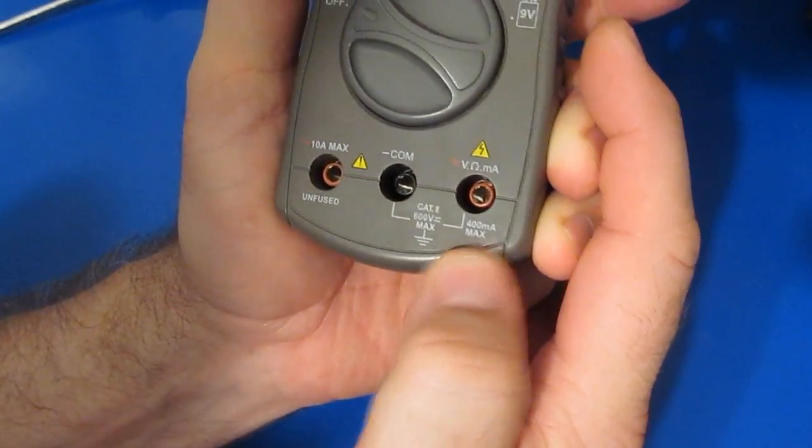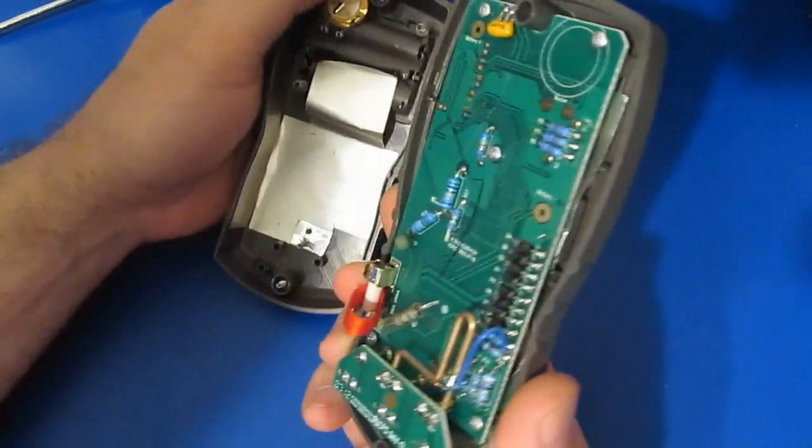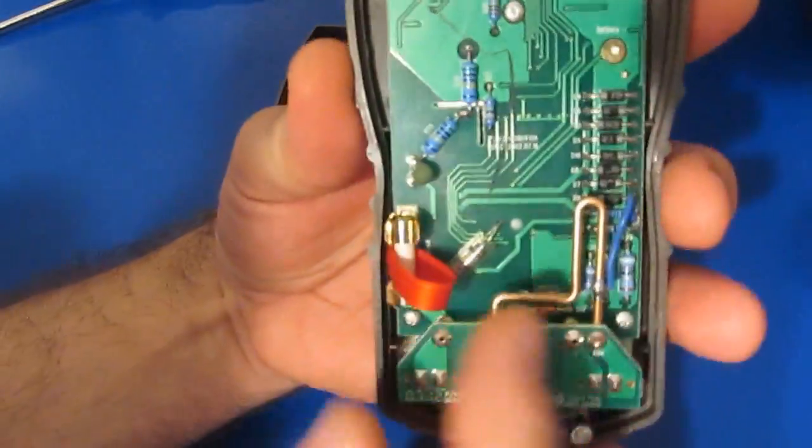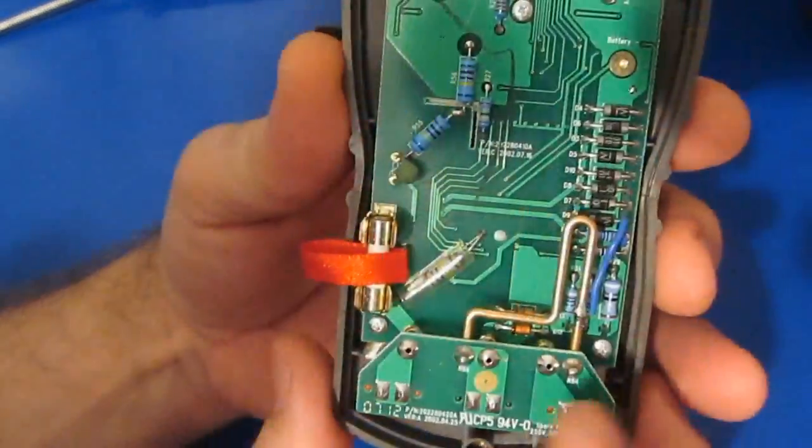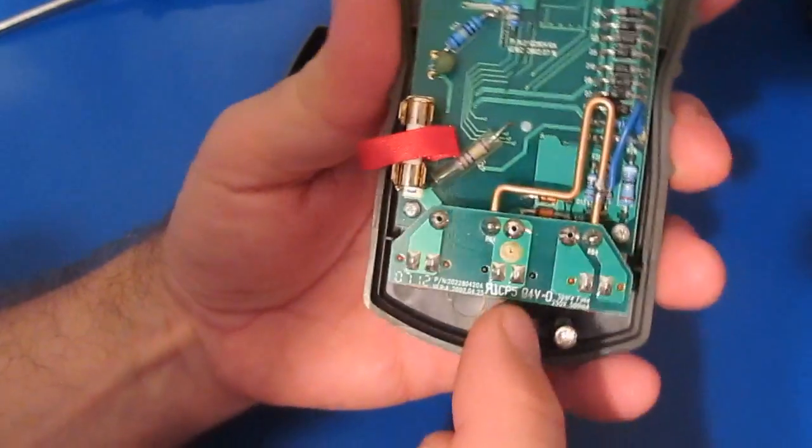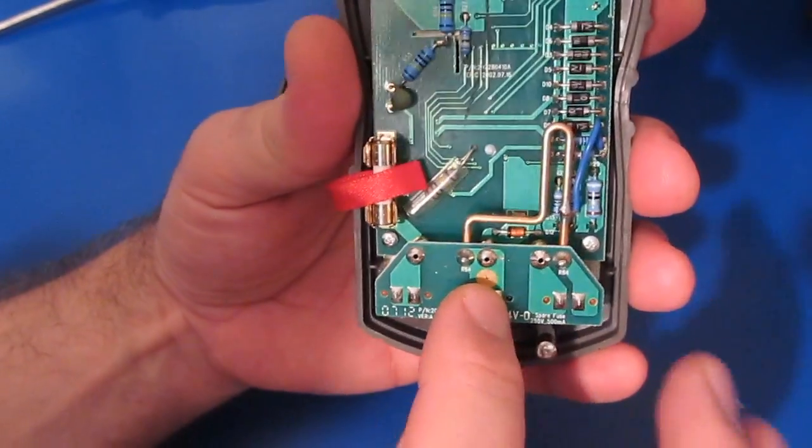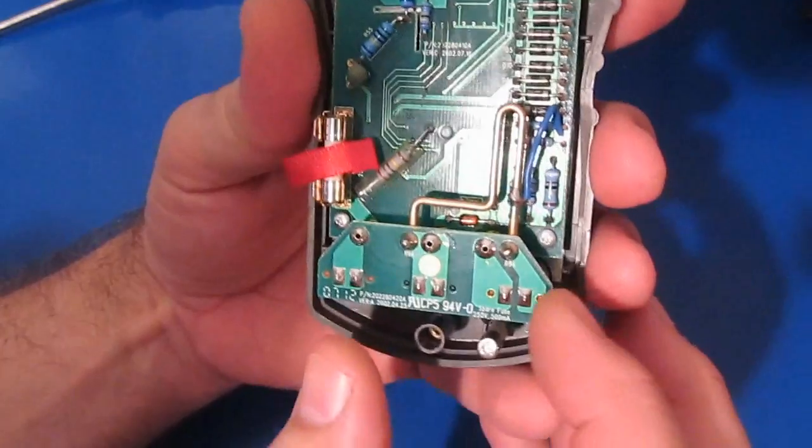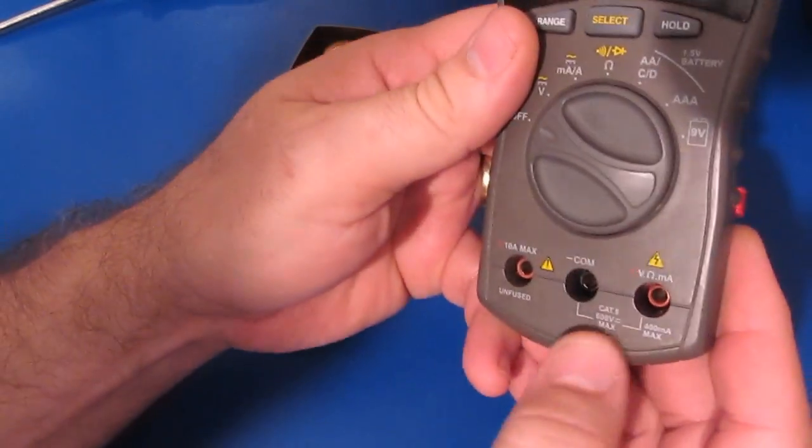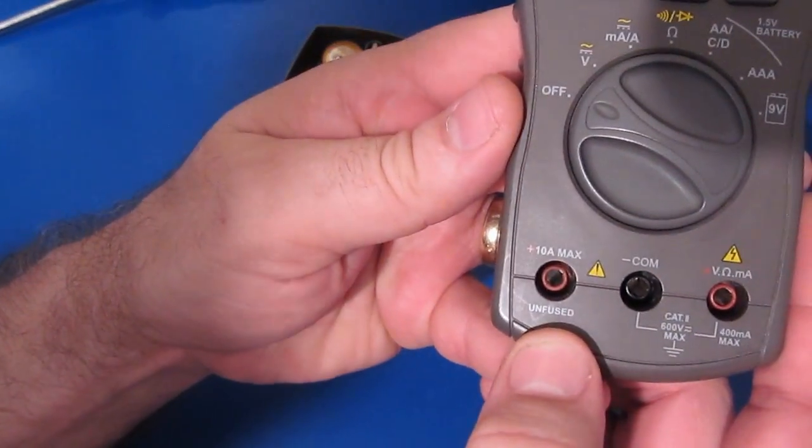This is one of those meters where they share the voltage input with the current. You can see right here it says 400 milliamps max. Here we can see the fuse, and you can see the high current input. It basically goes from this center jack right up to the high current. There is no fuse. Unfused.